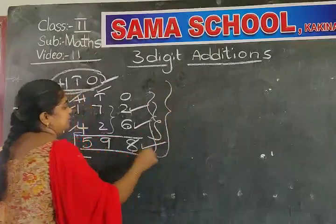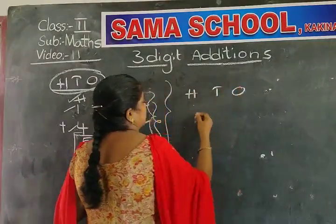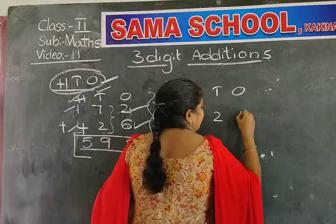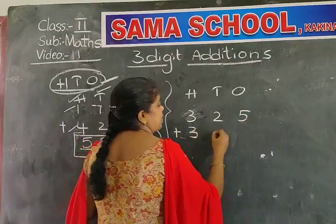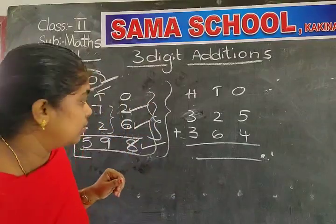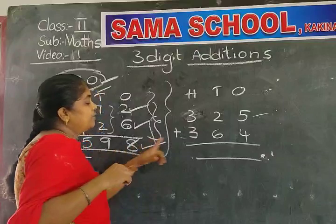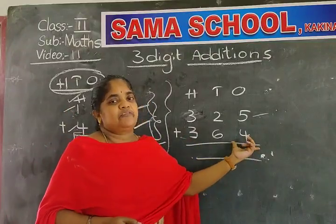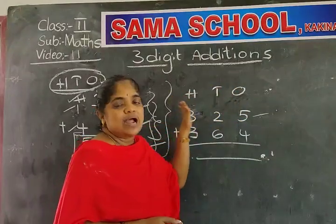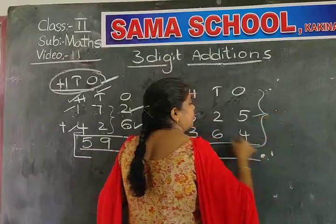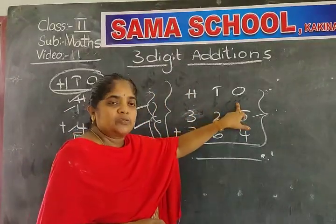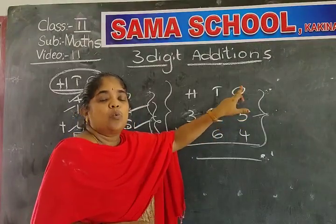One more problem. The first number is three hundred and forty-five, and the second number is three hundred and sixty-four. As usual, I wrote the place values — ones, tens, and hundreds. From where will you start the problem? From the ones place — never forget, always begin the problem from the ones place.